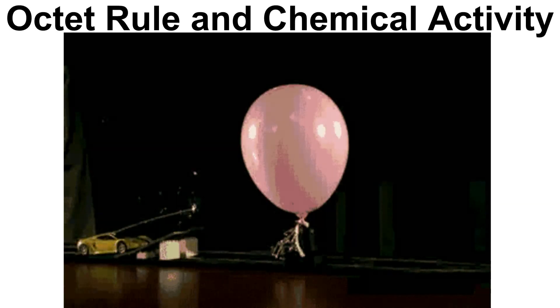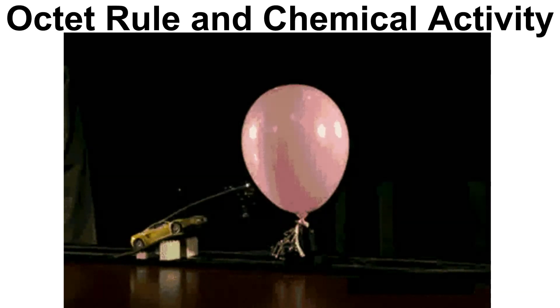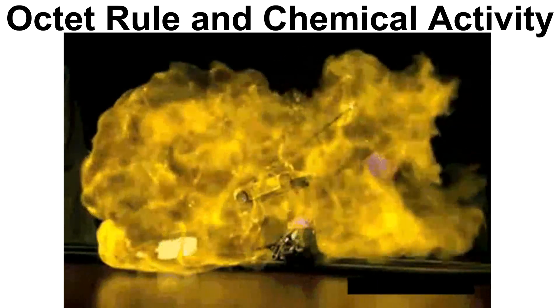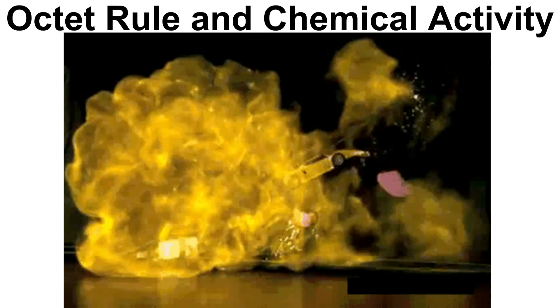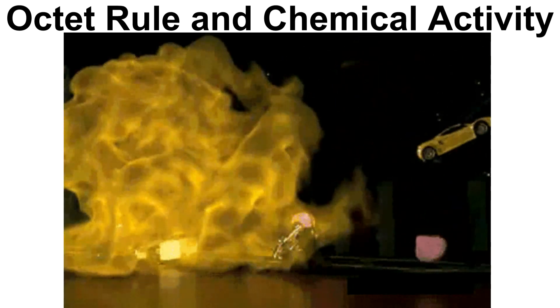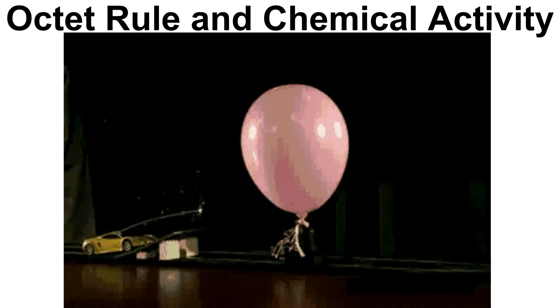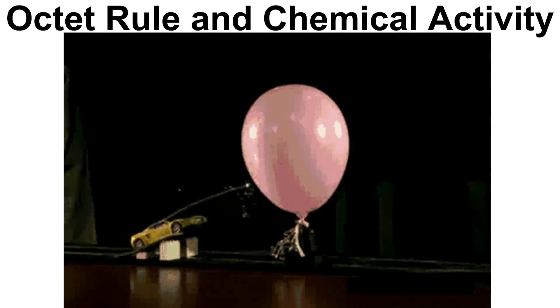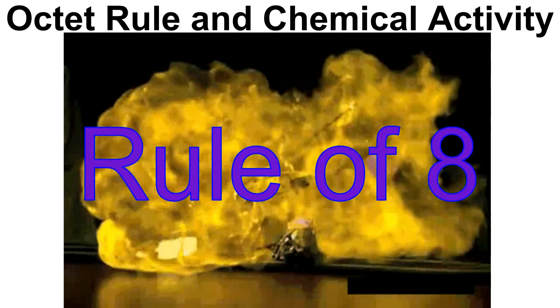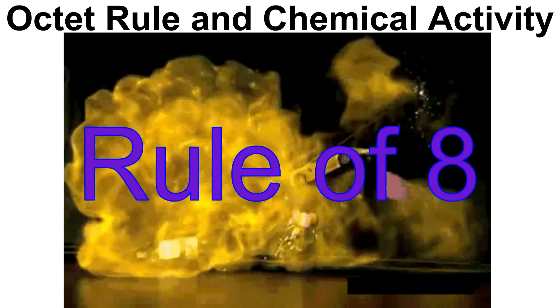Today we're going to apply what we learned yesterday about valence electrons to the reactivity of elements on the periodic table. Sometimes this is known as the octet rule, and sometimes you'll see it called the rule of eight.